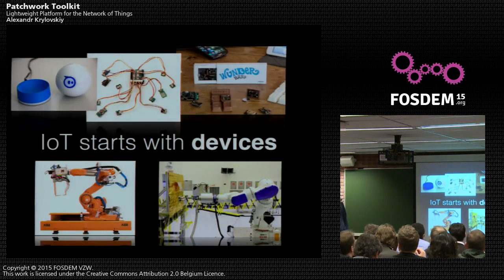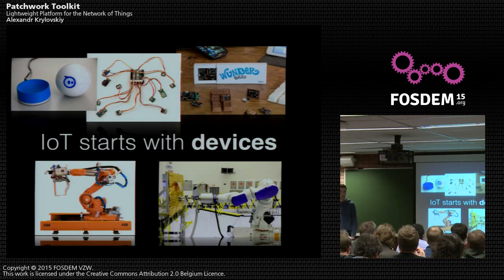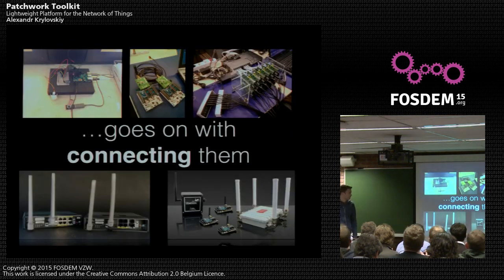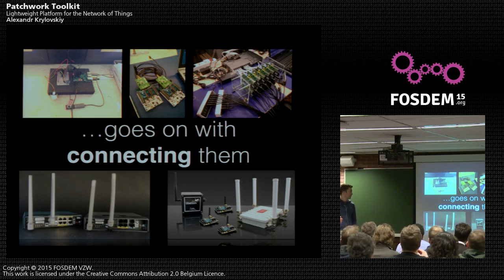The IoT starts with devices. There are a lot of them and they are all different — industrial devices, DIY electronics, things like Sphero for example, Wunderbar. Then we connect them together. One step is to assemble those devices and then put them on the network. It can be a wireless network or it can be a wired network.